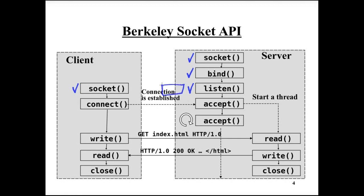Listen establishes a queue where connection requests can be queued, and the accept function handles connection requests in that queue — it checks if there is a connection request and, if so, accepts it and establishes a connection with the connecting socket. On the client side, the connect function sends a connection request to the queue of pending connections on the server side. Once accept returns, a connection is established, and normally the server submits communication on that connection to a new thread. The accepting thread on the server stays in a loop, continuing to accept more connection requests and spawning or submitting new threads for handling connections.